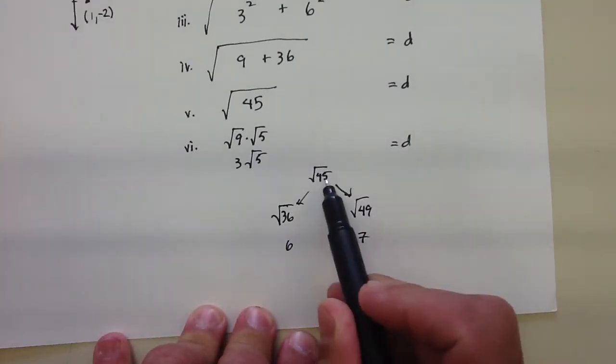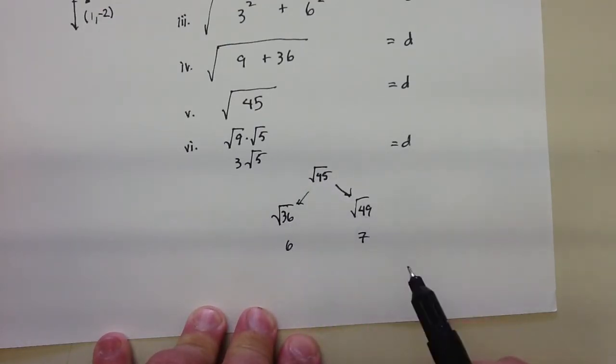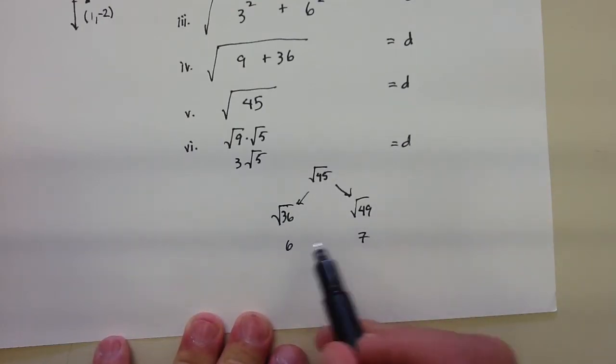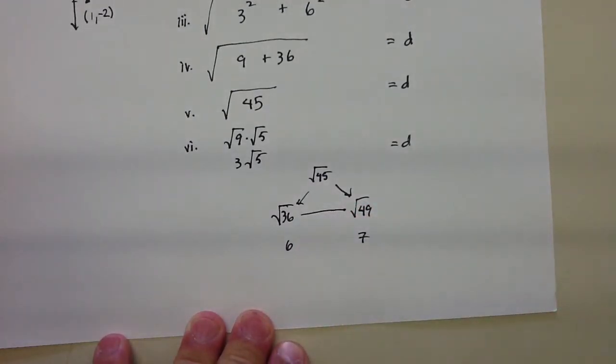So 45, the square root of 45, is between the square root of 36 and the square root of 49, which means that it would be somewhere between 6 and 7.